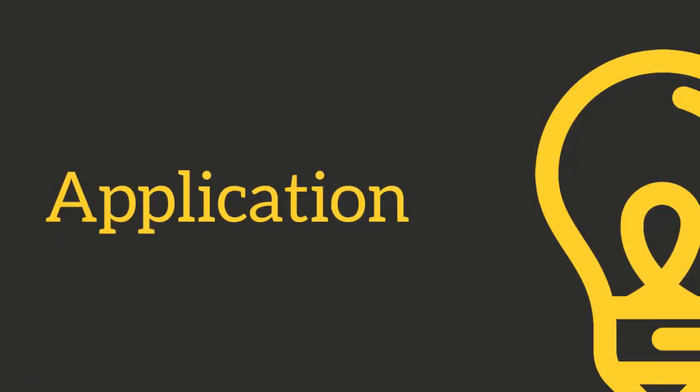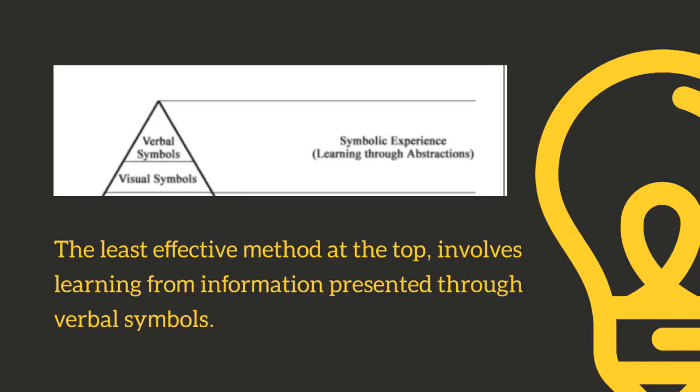How can teachers use the Cone of Experience? According to Dale's research, the least effective method at the top involves learning from information presented through verbal symbols. An example of this is listening to spoken words. In moving toward the pinnacle of the cone from direct, purposeful experiences to verbal symbols, the degree of abstraction gradually increases. As a result, learners become spectators rather than participants.